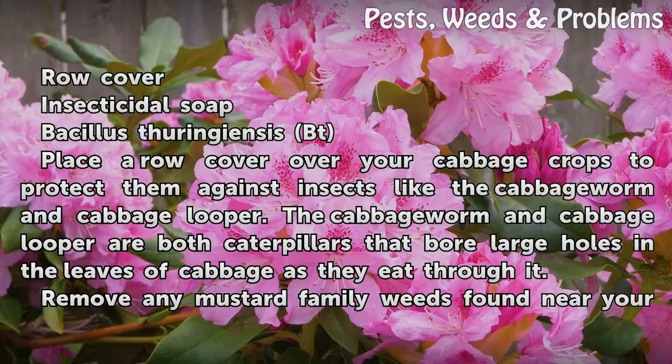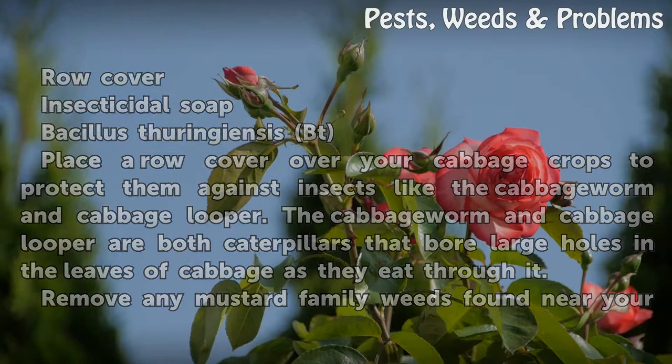Place a row cover over your cabbage crops to protect them against insects like the cabbage worm and cabbage looper. The cabbage worm and cabbage looper are both caterpillars that bore large holes in the leaves of cabbage as they eat through it.